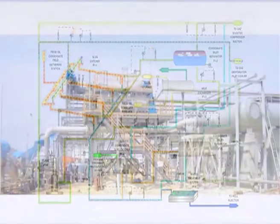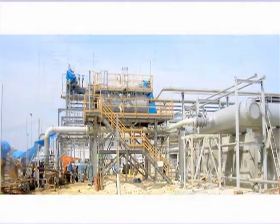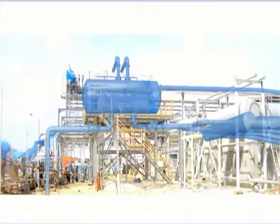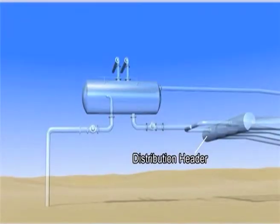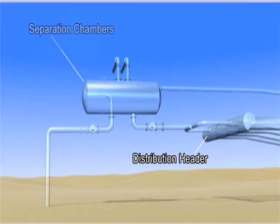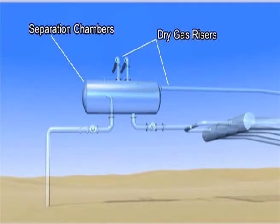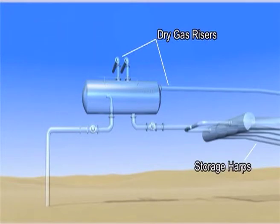The separator slug catcher consists of distribution headers, separation chambers, dry gas risers, storage harps, liquids, and sludge manifolds.